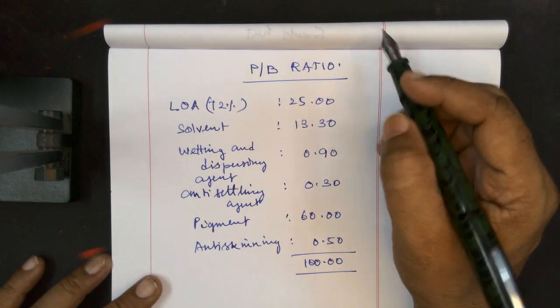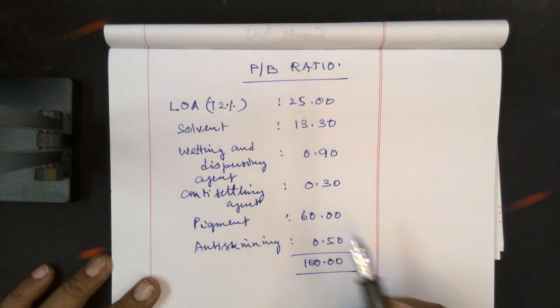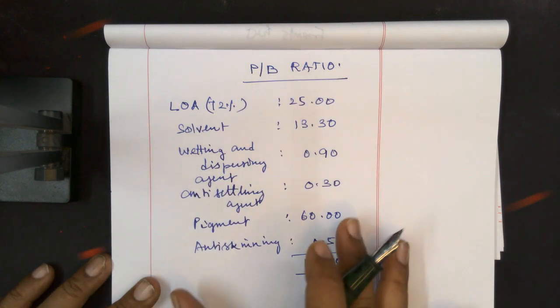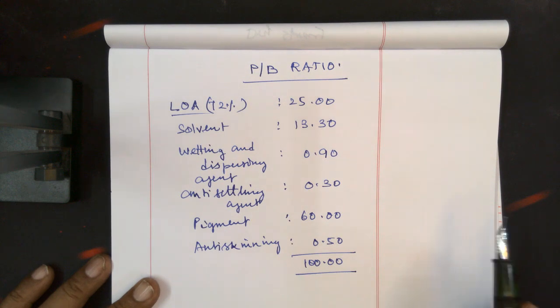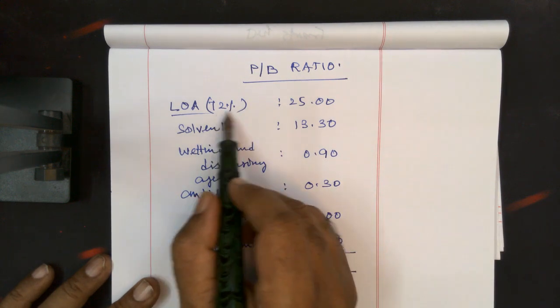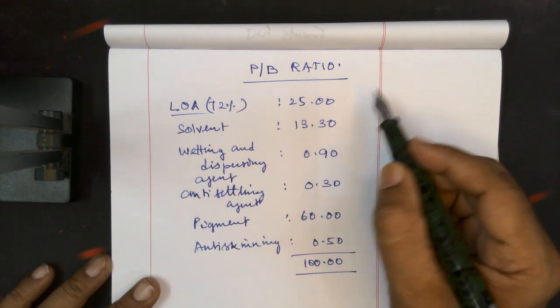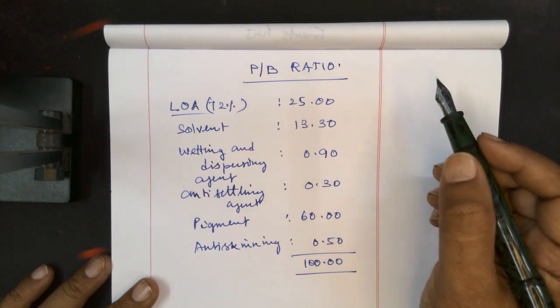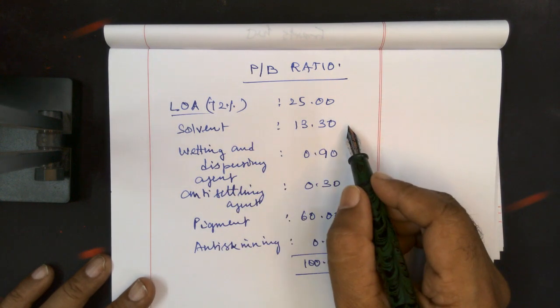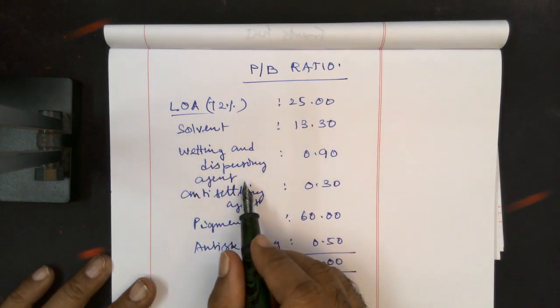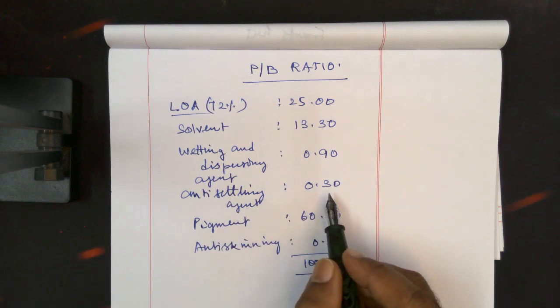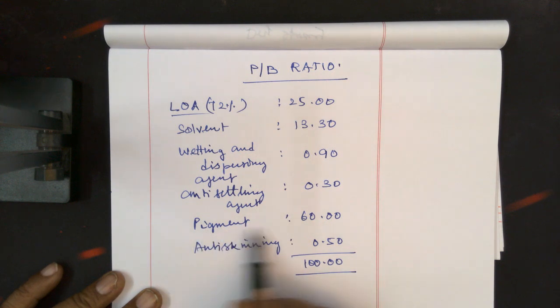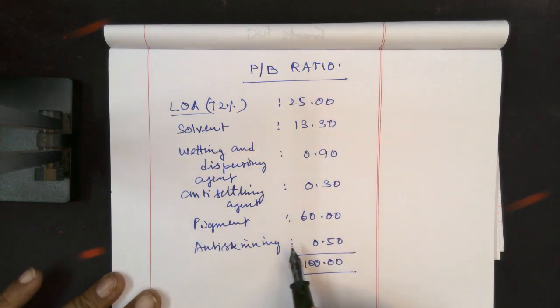Let us work out the pigment-binder ratio of an oil-bound paint with the long oil alkyd. Its solid content is 72%, and it is taken 25 parts by weight. Solvent is taken as 13.5, wetting and dispersing agent 0.9, anti-settling agent 0.3, then pigment. These are all pre-mixed and ground, and we are to add...